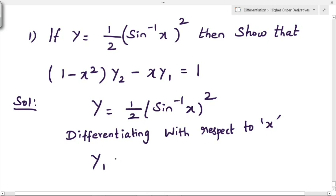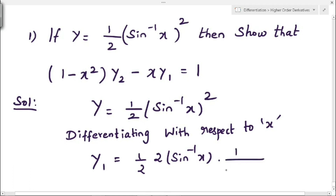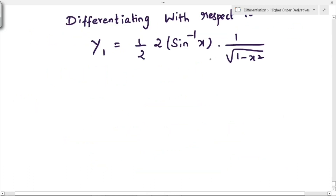Differentiating y = 1/2·(sin⁻¹x)² with respect to x: y₁ equals 1/2 is constant, so first we differentiate the power term — that gives 2·(sin⁻¹x)^(2-1) — then multiply by the derivative of sin⁻¹x, which is 1/√(1 - x²). Taking √(1 - x²) to the left-hand side gives √(1 - x²)·y₁.